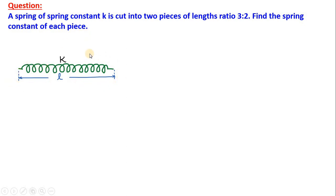Here we have got a spring of spring constant K whose length, let us suppose, is L. Now, it is cut into two pieces. Here are the two pieces. Let us say their spring constants are K1 and K2.